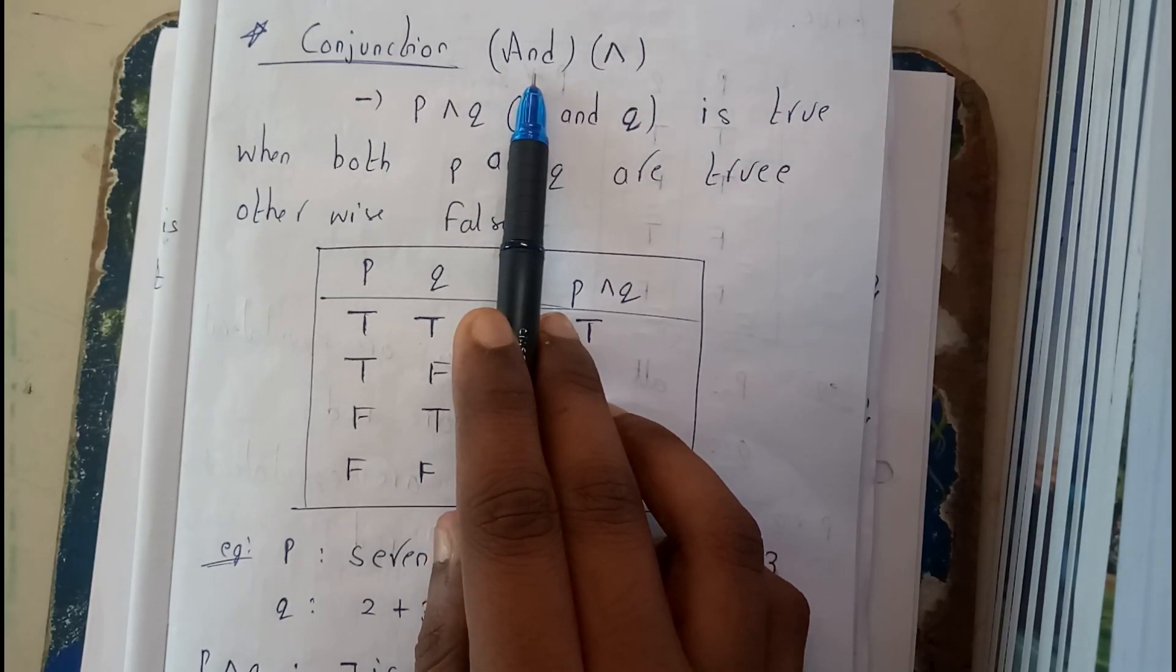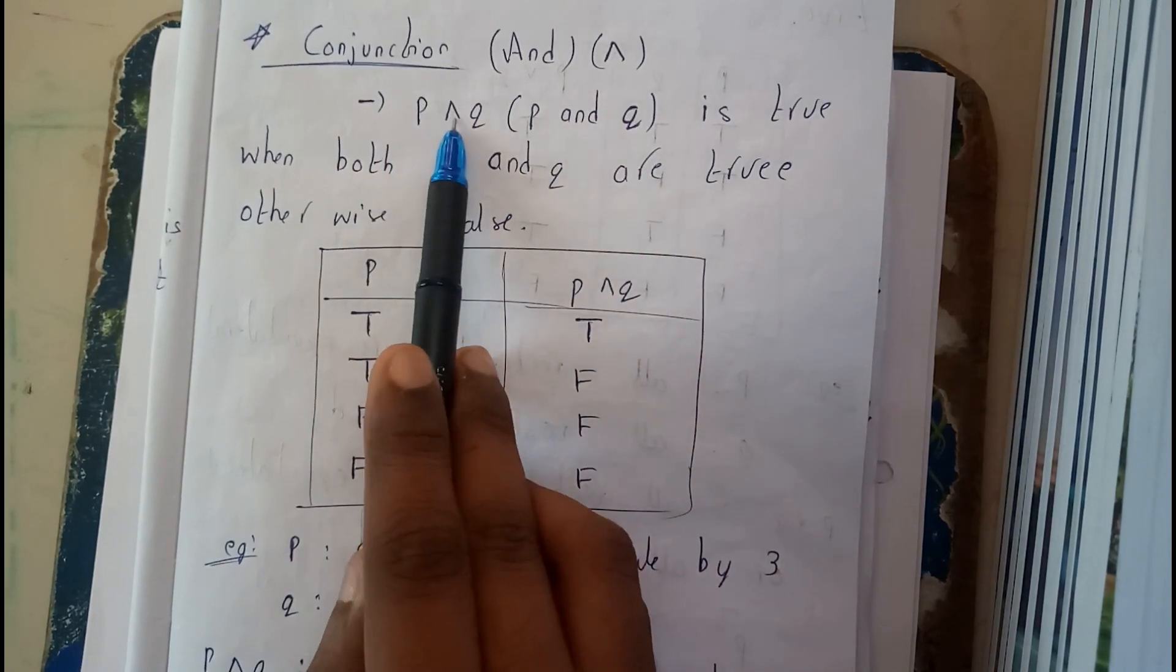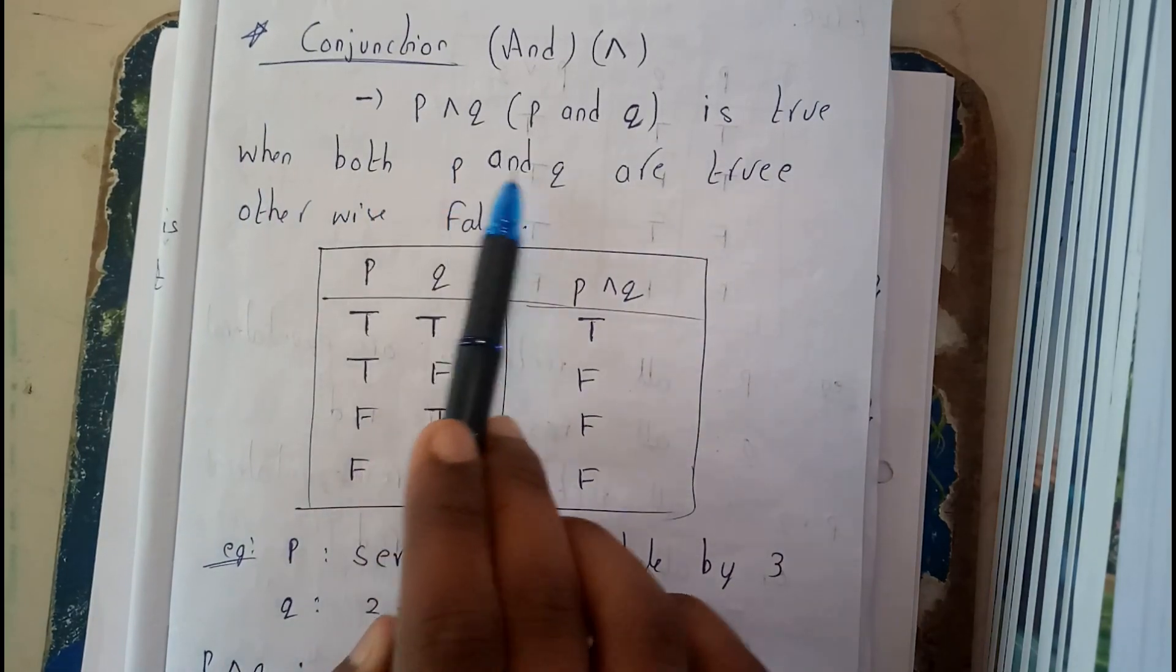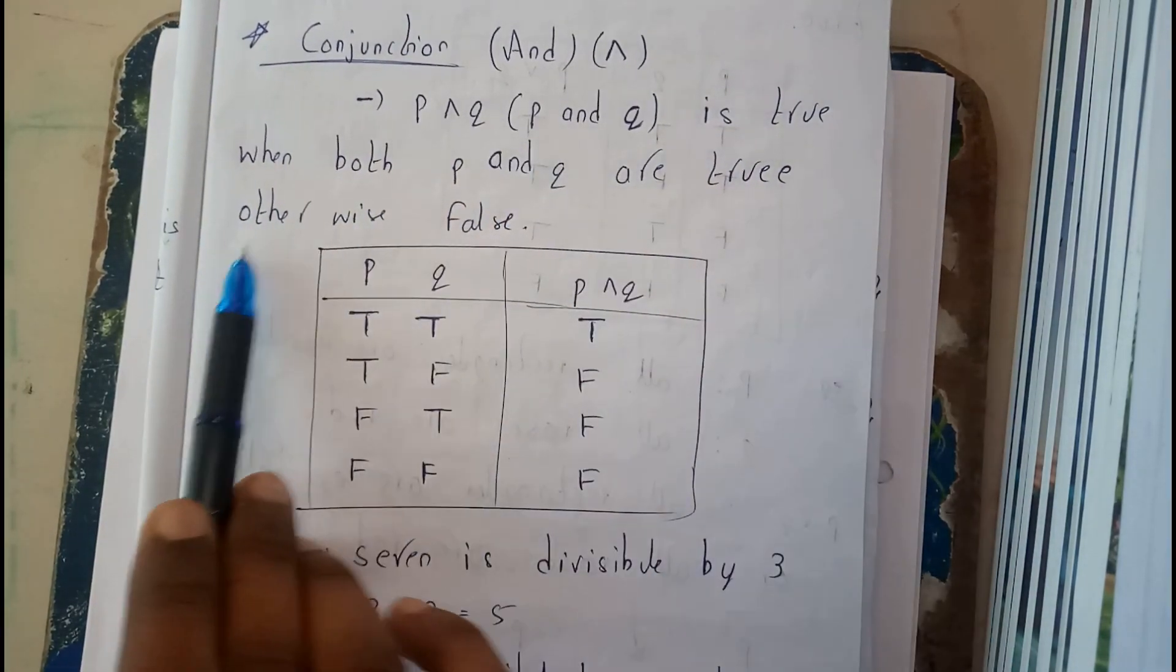While reading, you will say P conjugation Q, or we can read as P and Q. It is true when both P and Q are true, otherwise it is false.